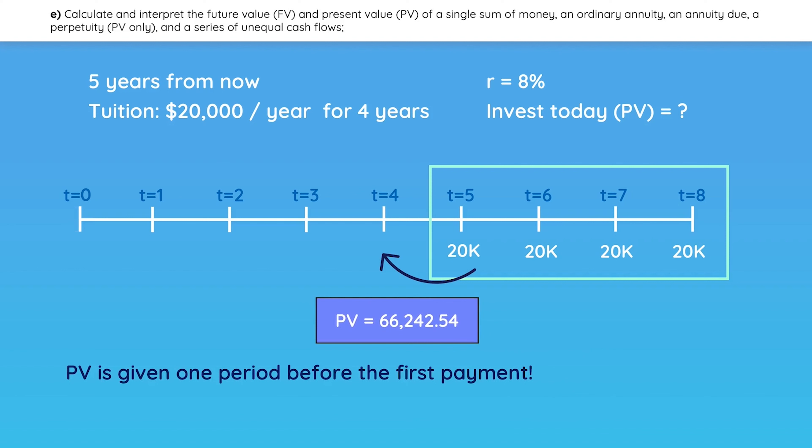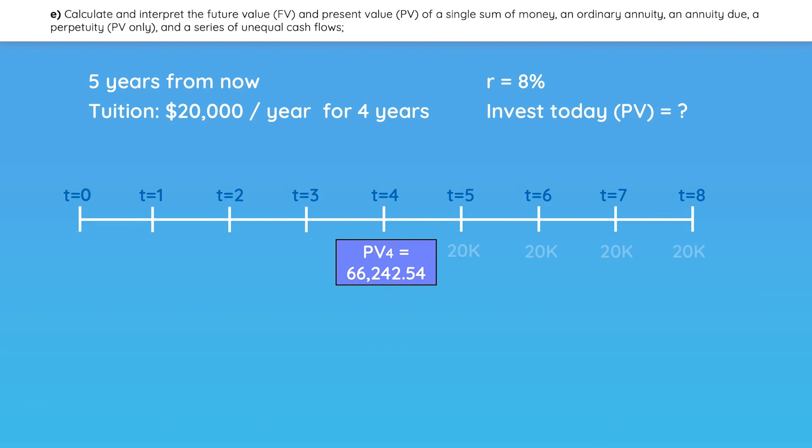$66,000 is the present value of the annuity at time 4, but we still need to bring it all the way back from year 4 to year 0. Let's bring that back to time 0. All you need to do is discount the $66,000 at 8% for the remaining four years.